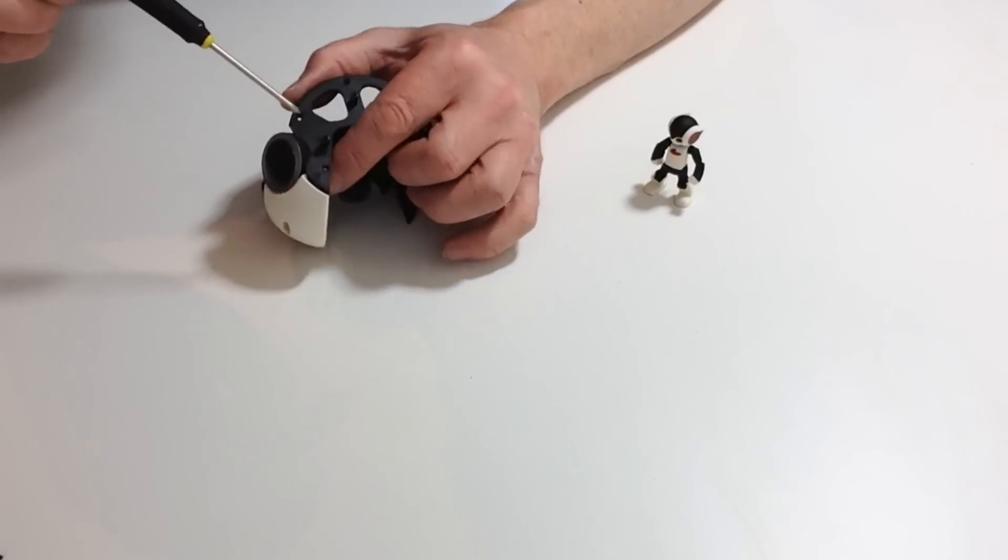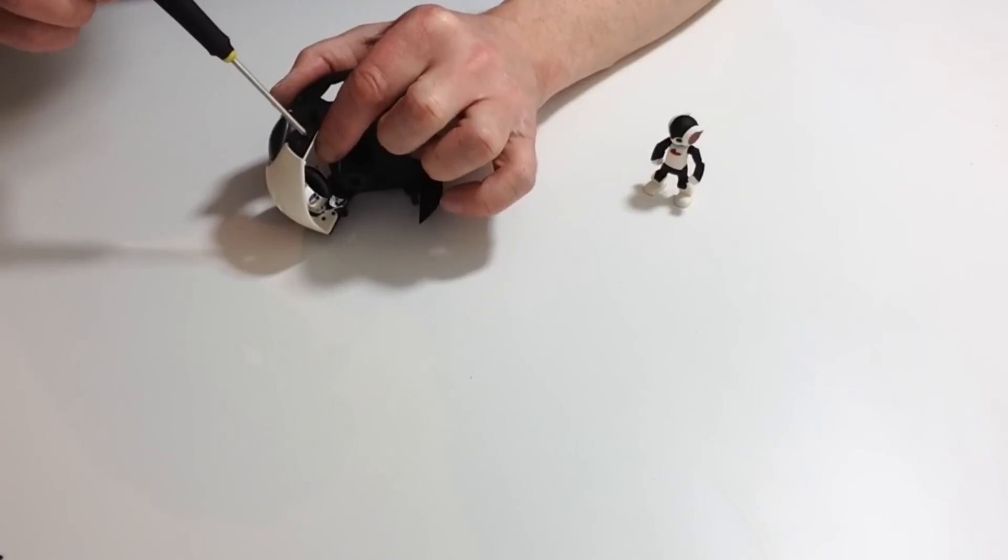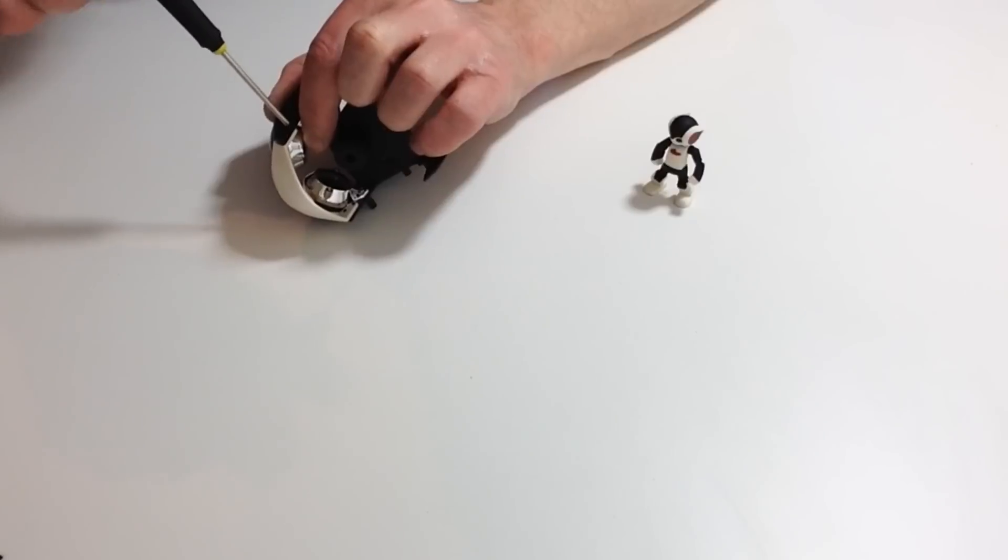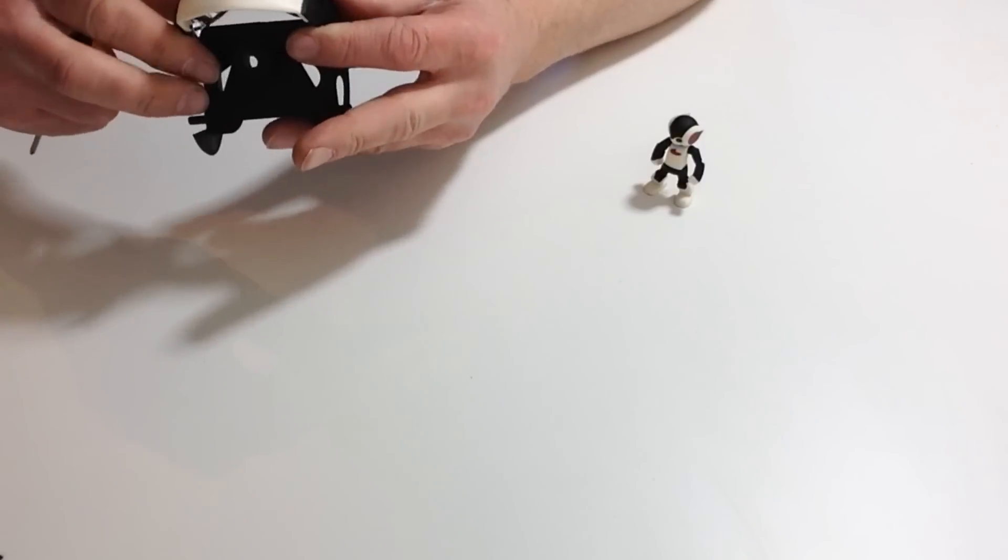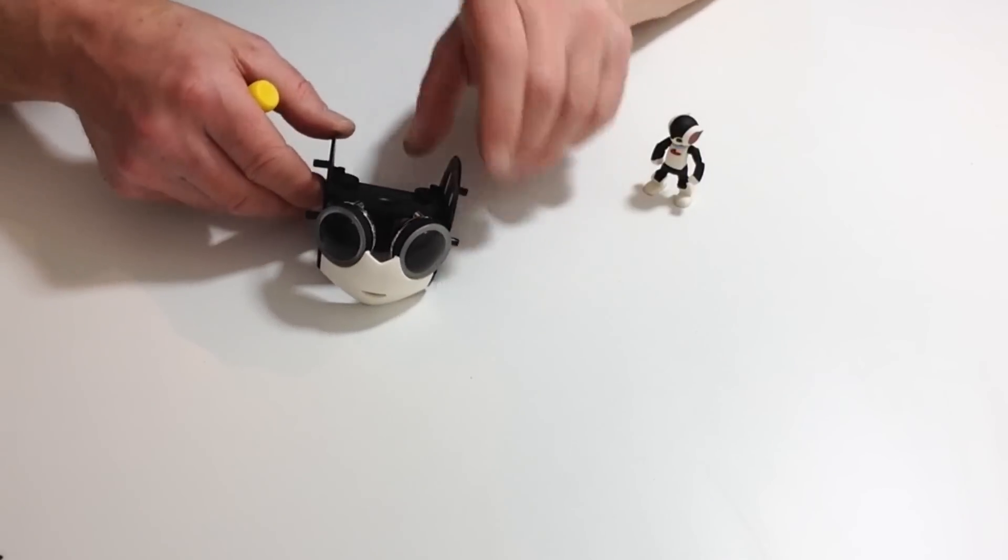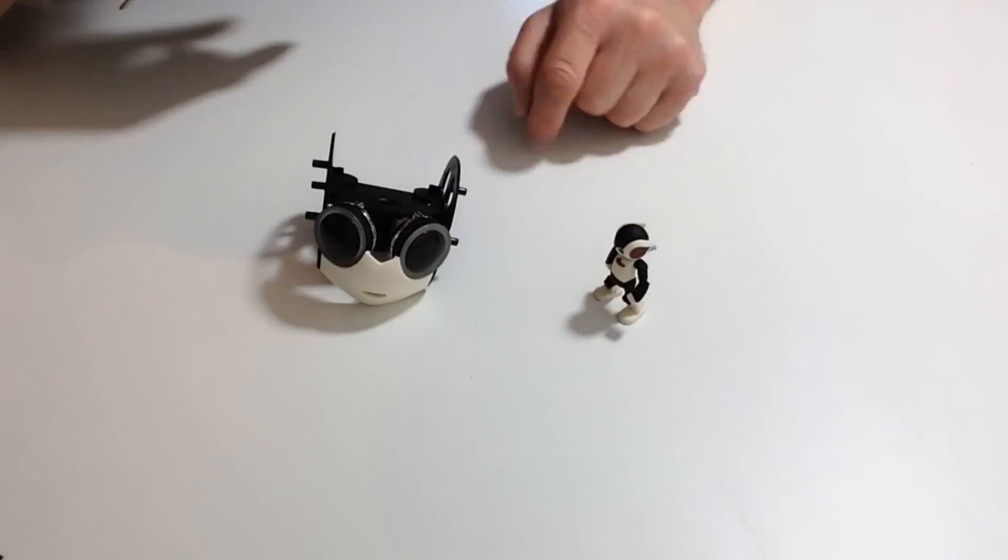By my calculations you should have two spare countersunk screws left over. As you can see, that's Robbie's face starting to come together and he looks happy as well.